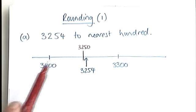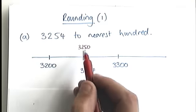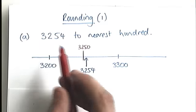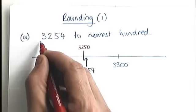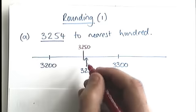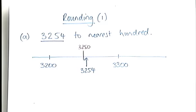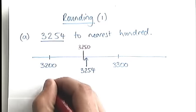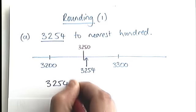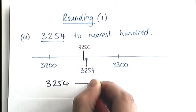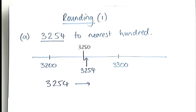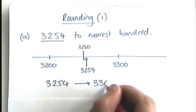And then what we've got in the middle here is a line representing halfway. I've put the number we've been asked to round, this 3,254, on the number line in the appropriate place. And you should be able to see that 3,254 is now closer to, and therefore it rounds to, 3,300.